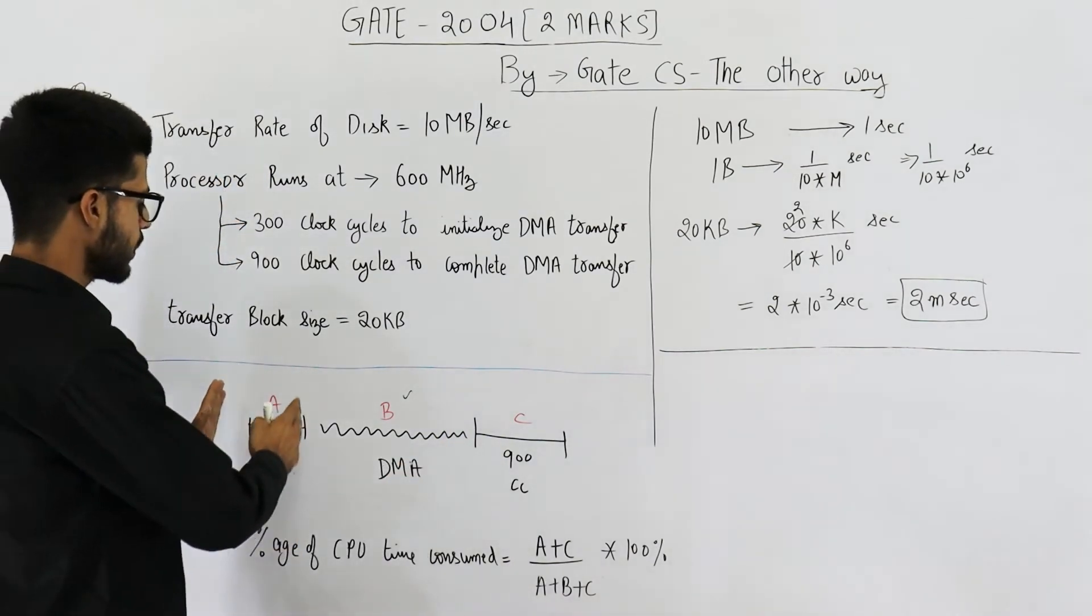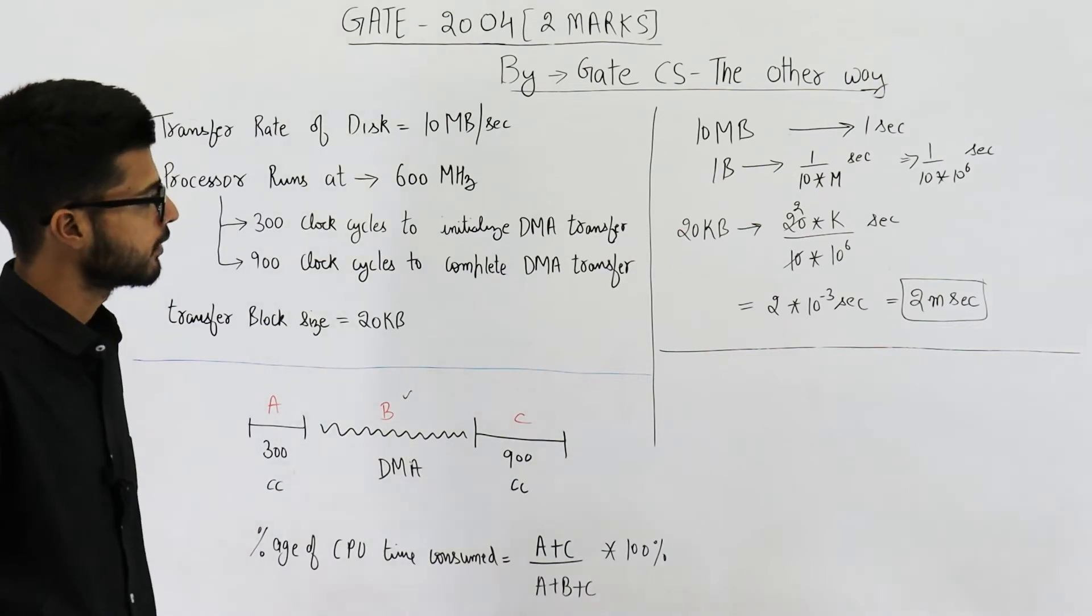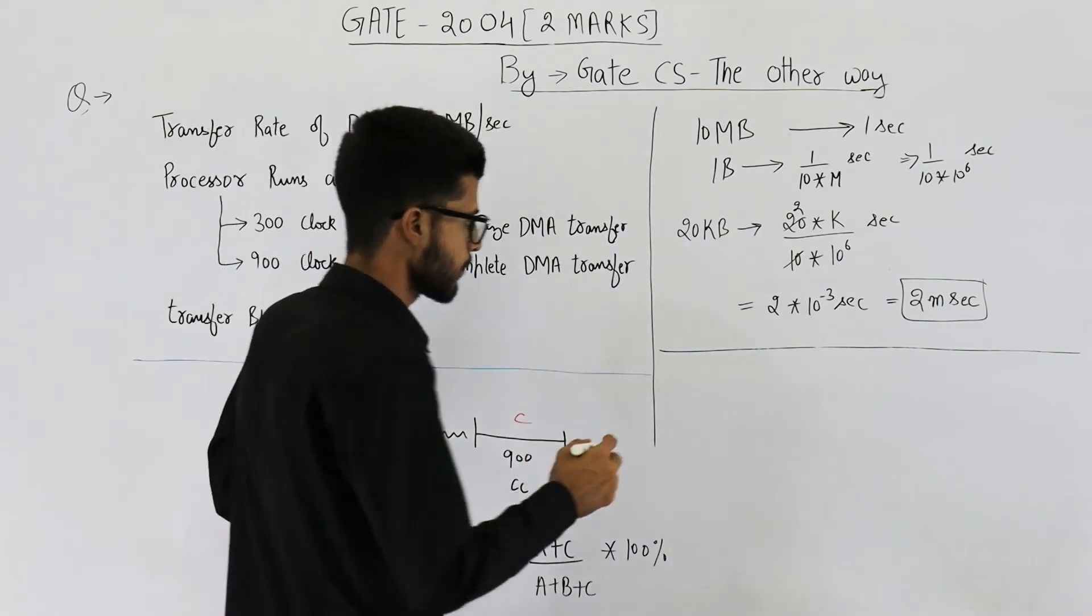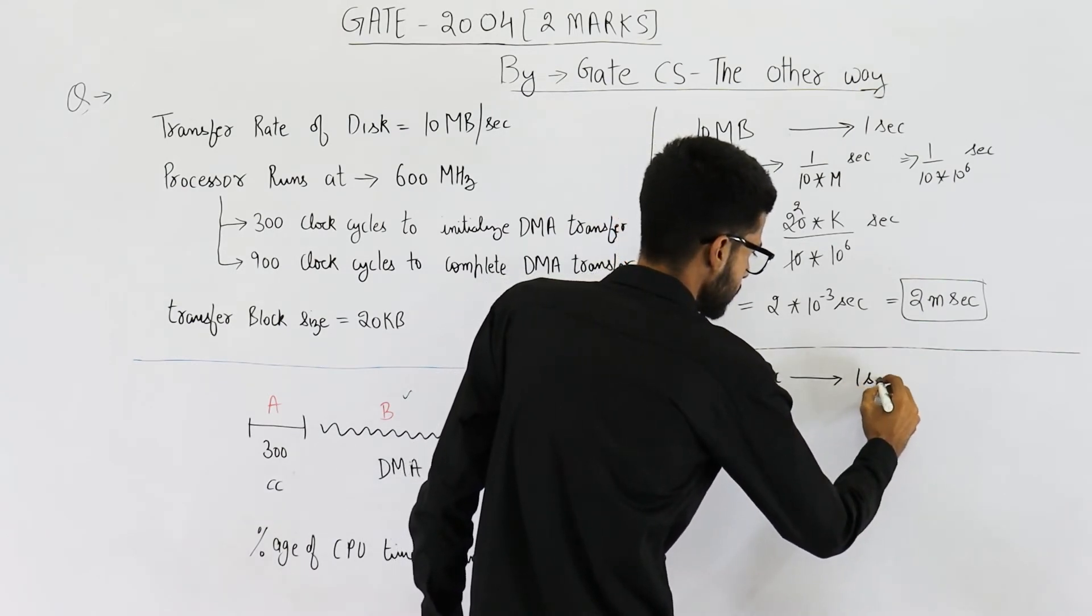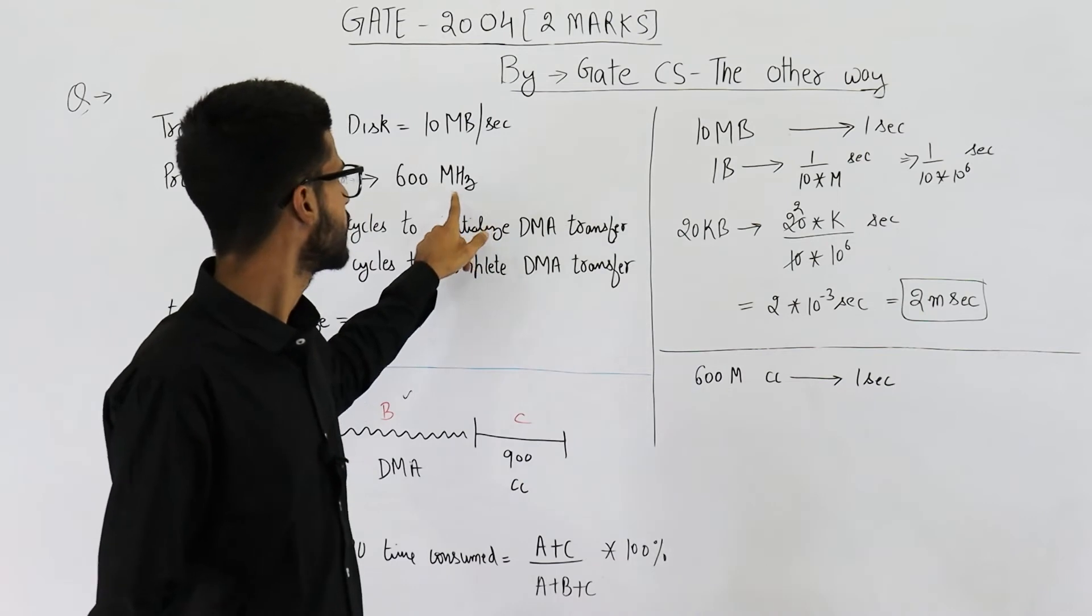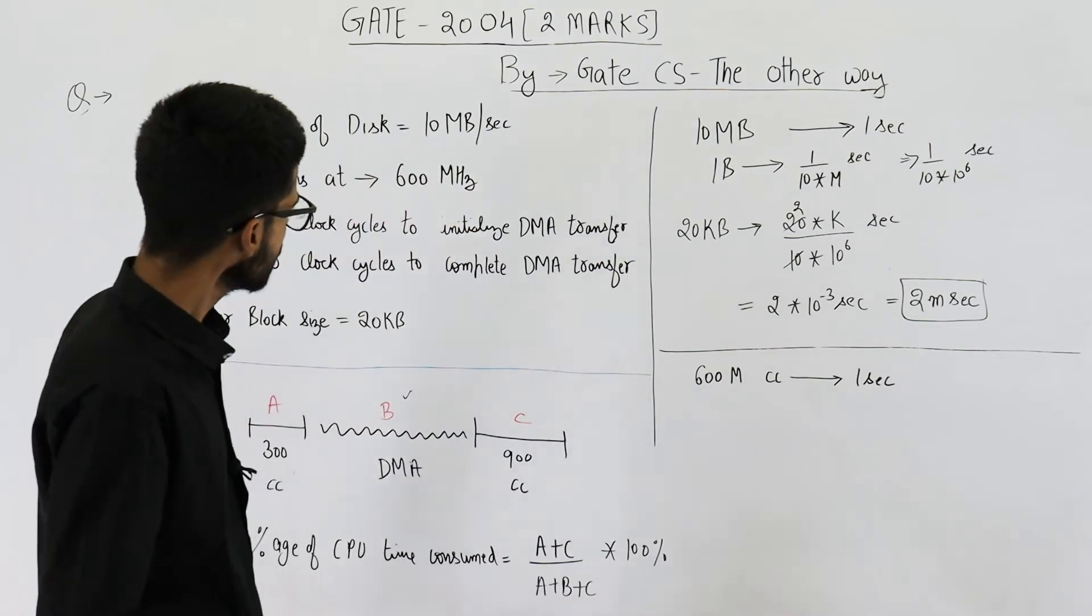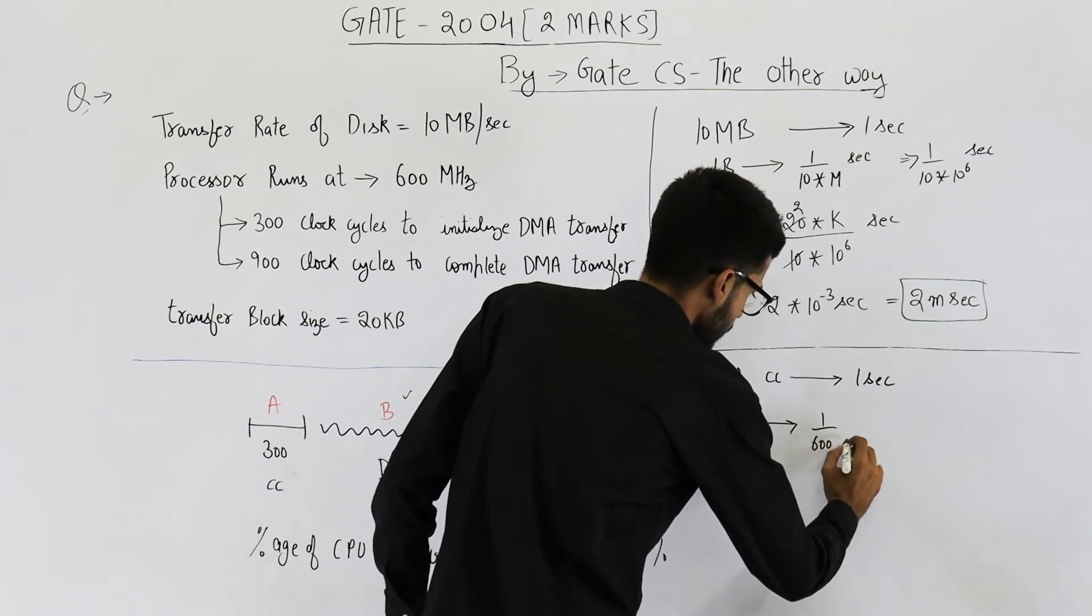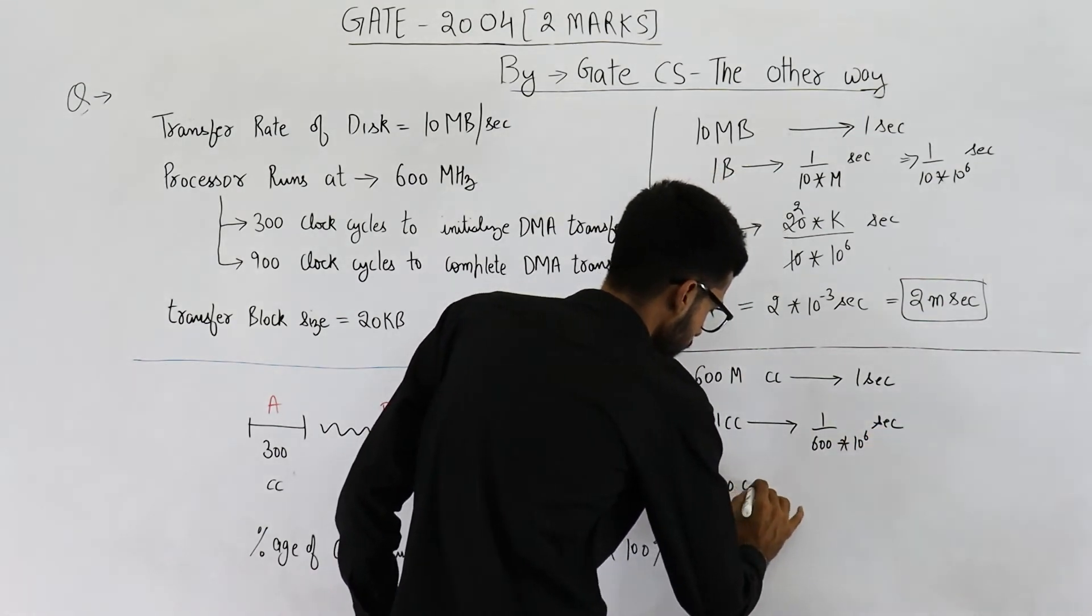So we have determined that this much time is 2 milliseconds. Now let's determine what is A plus C. That means how much time the CPU spend in this transfer. That is A plus C. So that is the time required for 1200 clock cycles. CPU runs at 600 megahertz. 600 mega clock cycles require 1 second. This is meaning of 600 megahertz. Hertz means times per second. That means 600 mega clocks are generated in 1 second. So this will be 1 clock cycle requires 1 upon 600 into 10 raised to the power 6 seconds.